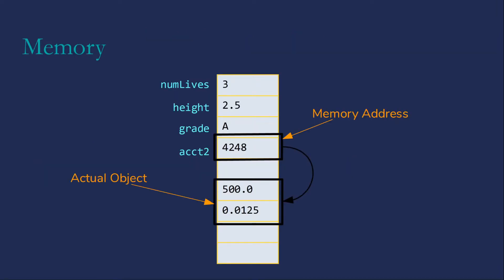Here I have a diagram of memory with three primitive variables. We have numLives which is currently 3, height is 2.5, grade is A, and then I have a savings account.